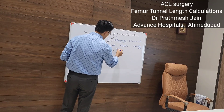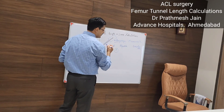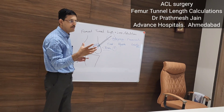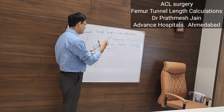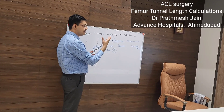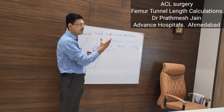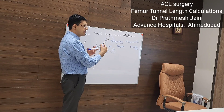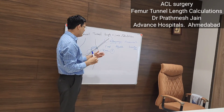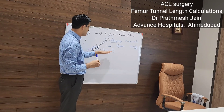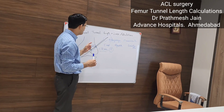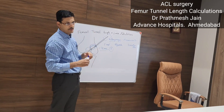If the tunnel length is less than 30 mm, I recommend you don't accept it, because we need at least 50 mm of graft in the tunnel. The smallest available button size is 15 mm, but anything less than 30 mm is not easy to flip. So if the tunnel is less than 30 mm, consider revising your primary bead pin placement.